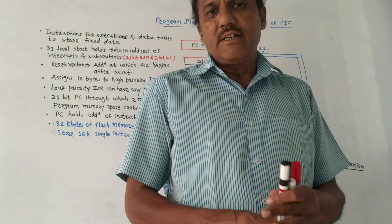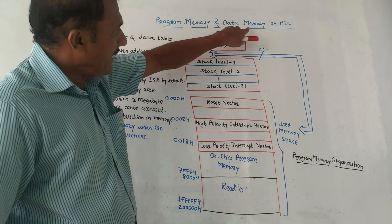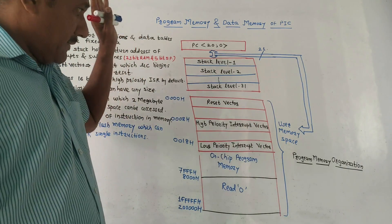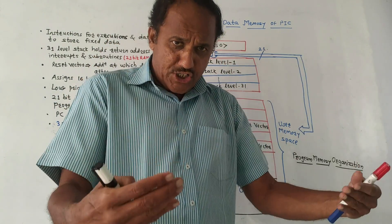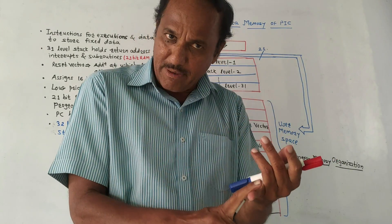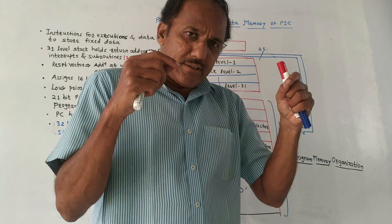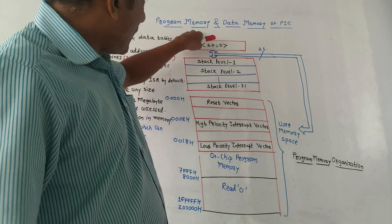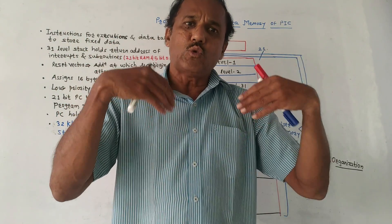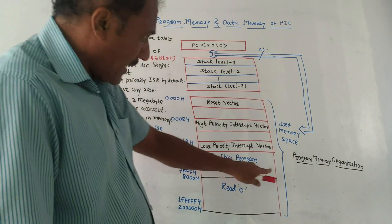Hello and welcome back to this channel. This topic is program and data memory organization for PIC microcontroller. There are two major types of memory locations: one is program memory and another is data memory. As far as this PIC microcontroller is concerned, separate buses are allocated to both program as well as data memory, so simultaneously these two memory locations can be accessed.